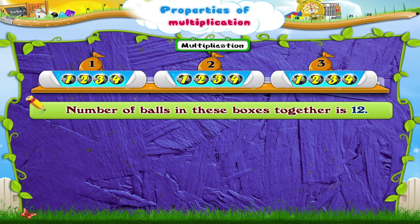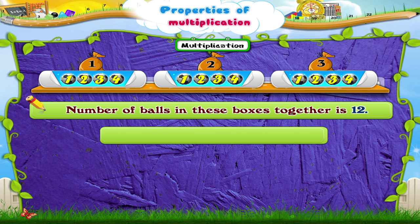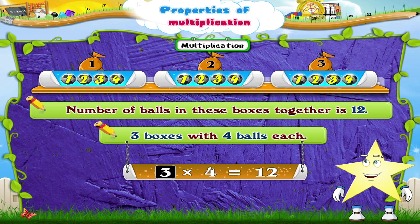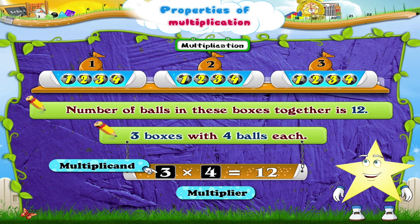Counting the number of balls in this set of boxes together, we have twelve balls in all. We have three boxes with four balls each. So we can say that three times four means a total of twelve balls. Here, three is called the Multiplicand, four is called the Multiplier, and twelve is called the Product.